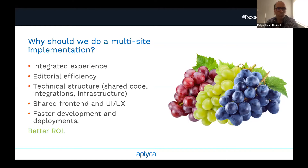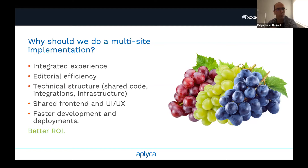Why do you want to do this? You want an integrated experience for users to jump around those sites fluidly. You can have editorial efficiency — a single editorial team or segregated teams managing content on different sites without multiple logins. You have a shared technical structure: shared code, shared integrations, shared infrastructure, and shared templates or front-end components. You have faster deployments, faster development, and ultimately a better return on investment on digital experience projects.